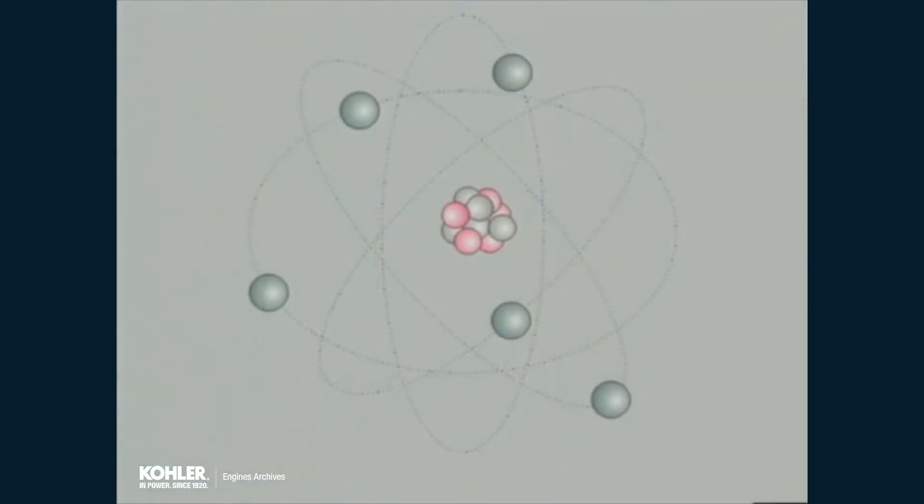All matter is made up of atoms. Similar to our solar system, with the sun in the center and planets in orbit, each atom has a center portion called the nucleus with one or more electrons in orbit. The electrons have a negative charge and are held in their atomic orbit by the attraction of a positive charge in the nucleus.